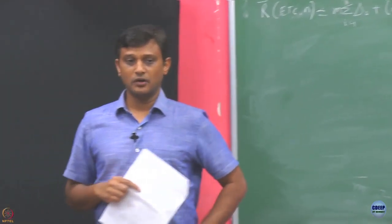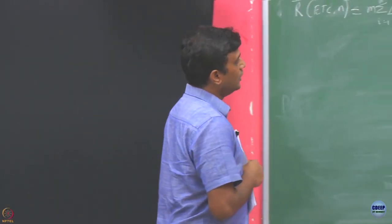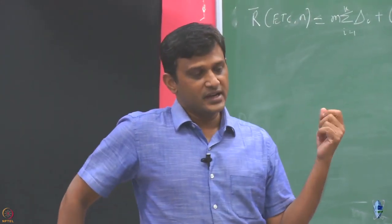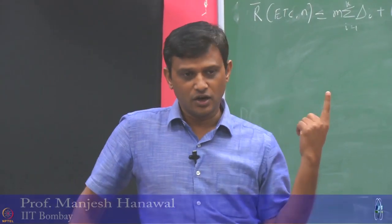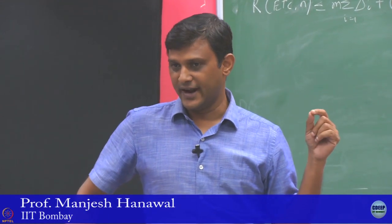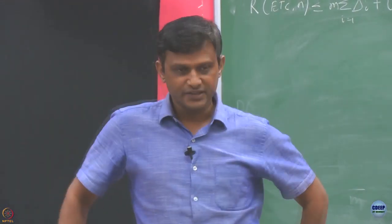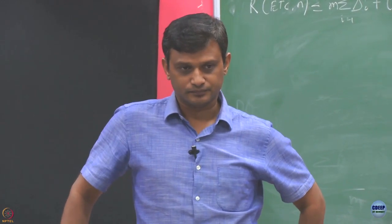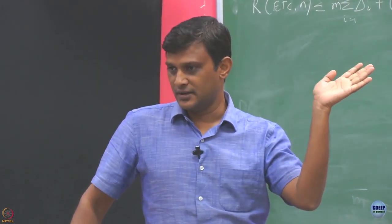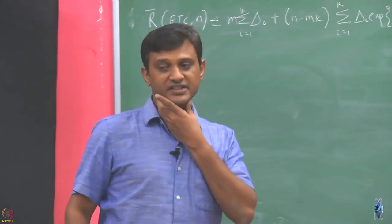So, we have this bound. Now, let us see — my input parameter to the algorithm is what? We said that is going to be m. What is m? m is the number of plays of each arm before I commit to somebody. Now, how should we select this m?